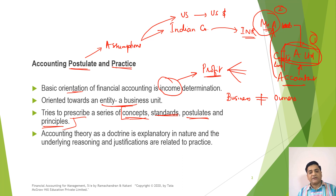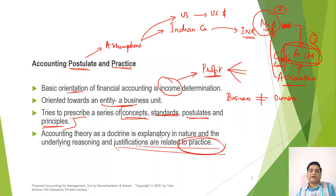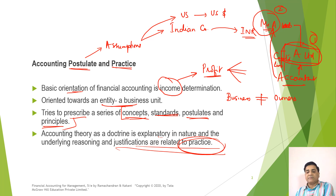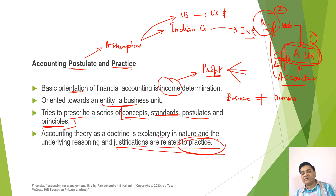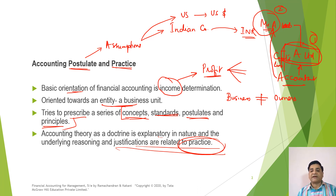Accounting theory as a doctrine is explanatory in nature and the underlying reasons and justifications are related to the practice. The rules which are applicable today in the accounting world may not be the same as they were 100 years back. So the first thing we need to understand in accounting as a measurement and valuation system is what the accounting postulates are and what the accounting practices are.